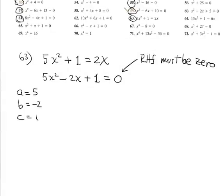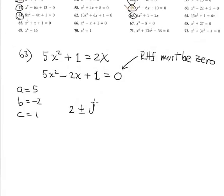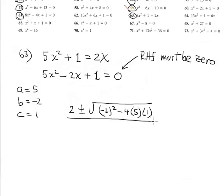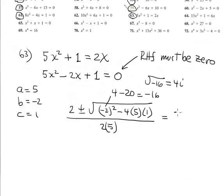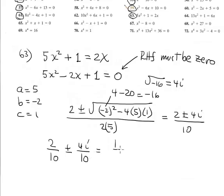Apply the quadratic formula. Negative b — negative of negative 2 — is plus 2, plus or minus square root of (-2)² minus 4 times 5 times 1, divided by 2 times 5. Negative 2 squared is positive 4, minus 4 times 5 is 20; the result is negative 16. Square root of negative 16 is 4i. So far we have (2 ± 4i) / 10. Separate: 2/10 ± 4i/10.